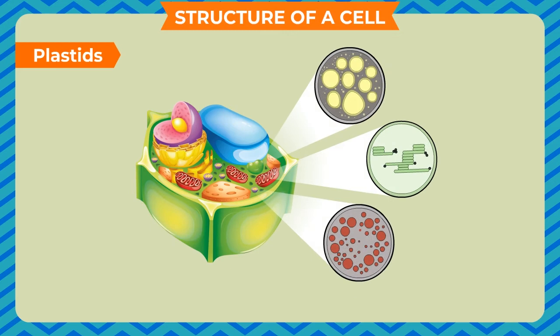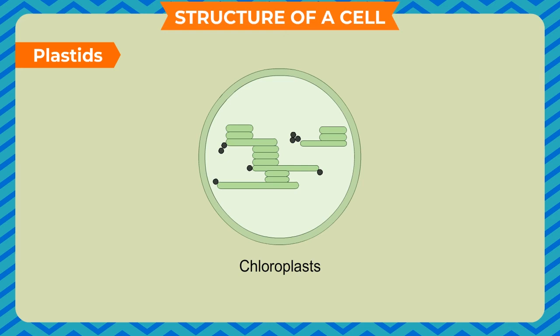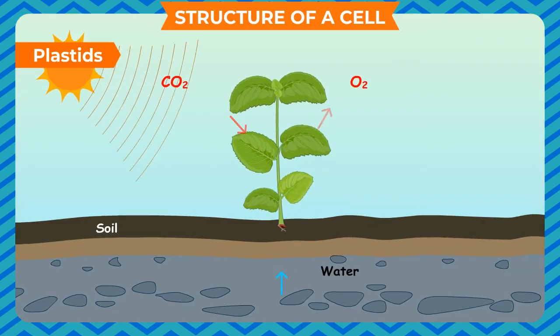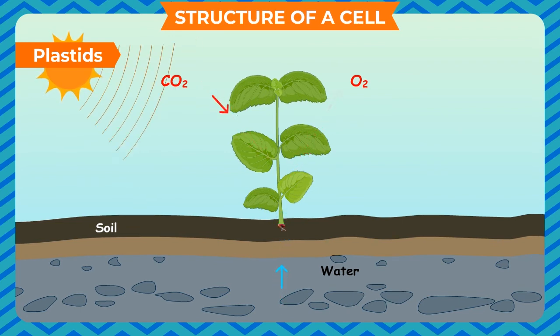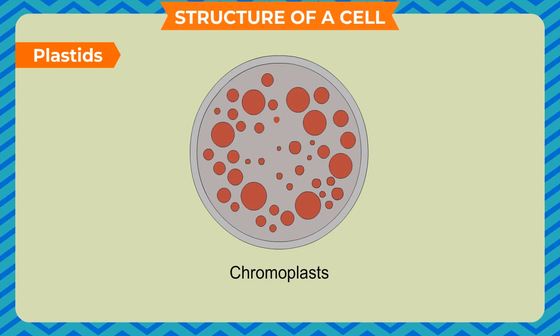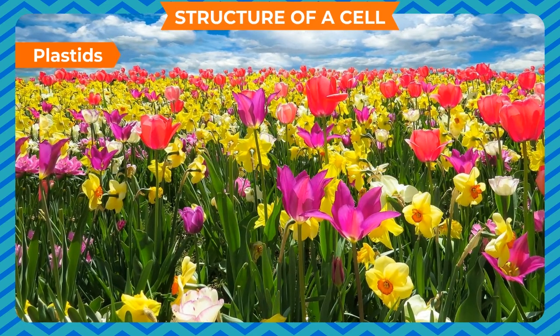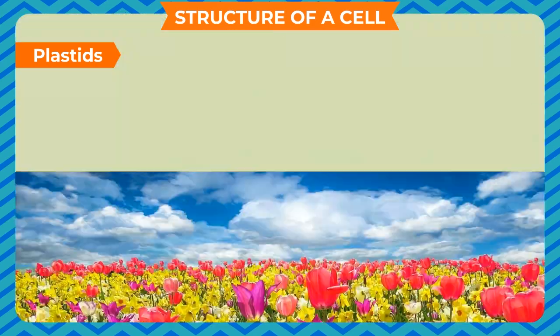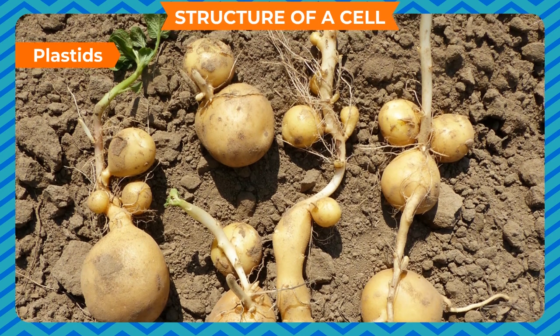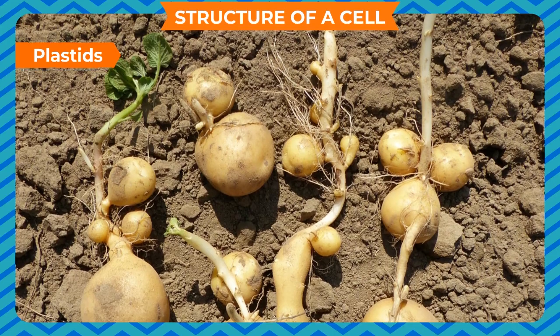Plastids - they occur only in plant cell. They are of three types. Chloroplasts (chloro = green) - they contain chlorophyll present in leaves which gives them a green color. They help in photosynthesis. Chromoplasts (chromo = color) - they are colored. They provide color to flower and fruits. Leukoplasts (leuko = white) - they are colorless and help in storage of food in potato tuber.